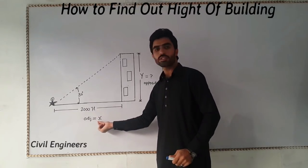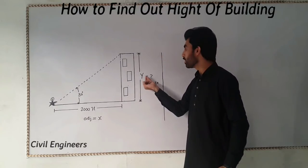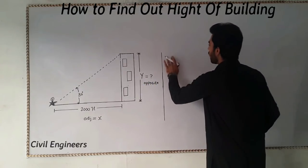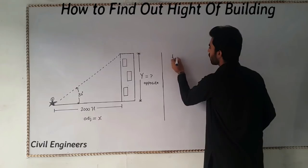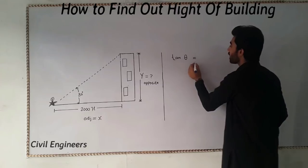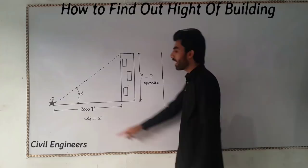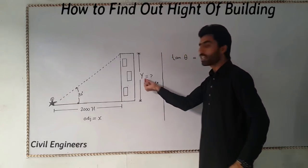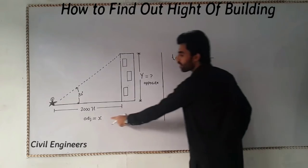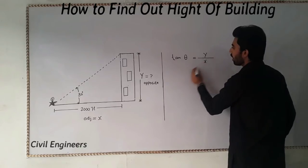The hypotenuse is equal to X and the opposite side is equal to Y, so I need the distance of Y. For that I have to use the formula sine theta. Sine theta equals Y divided by X — that is opposite divided by hypotenuse. So opposite is Y and hypotenuse is X.